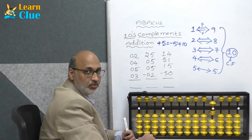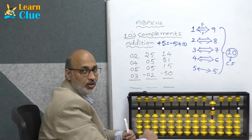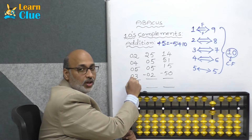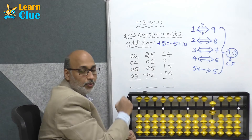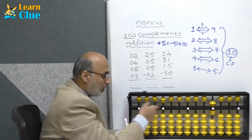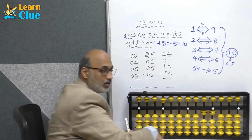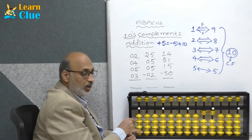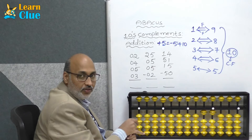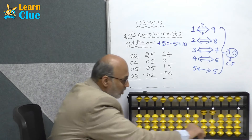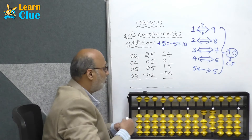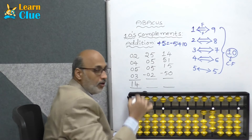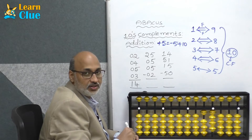Now they are asking plus 5, so it won't solve in any other way — it will be solved only in tens complements. Who is the friend of 5? 5 itself. So minus 5 plus 10. Now they are asking plus 3 — are the beads available? Yes, the beads are pretty available. So what is the answer? Answer is 14.